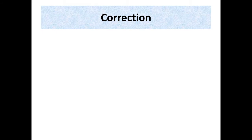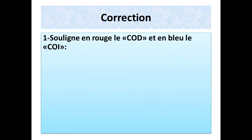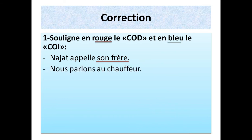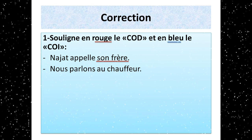On reste avec la correction des exercices. Pour la première question, souligne en rouge le COD et en bleu le COI. Première phrase : Najat appelle son frère. Najat appelle qui ? Najat appelle son frère. Donc c'est un complément d'objet direct. Deuxième phrase : nous parlons au chauffeur. Nous parlons à qui ? Nous parlons au chauffeur. « Au chauffeur », c'est un complément d'objet indirect.